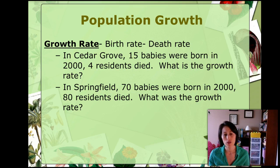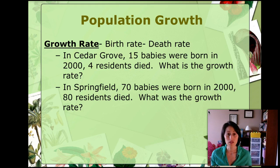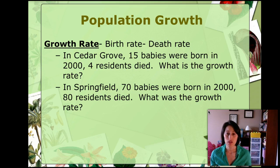When talking about growth, we look at birth rate minus death rate. In Cedar Grove, 15 babies were born in the year 2000 and 4 residents died, so the growth rate would be 11. In Springfield, 70 babies were born and 80 residents died, giving a growth rate of negative 10. There can actually be a negative growth rate — that's where deaths exceed births within that year.